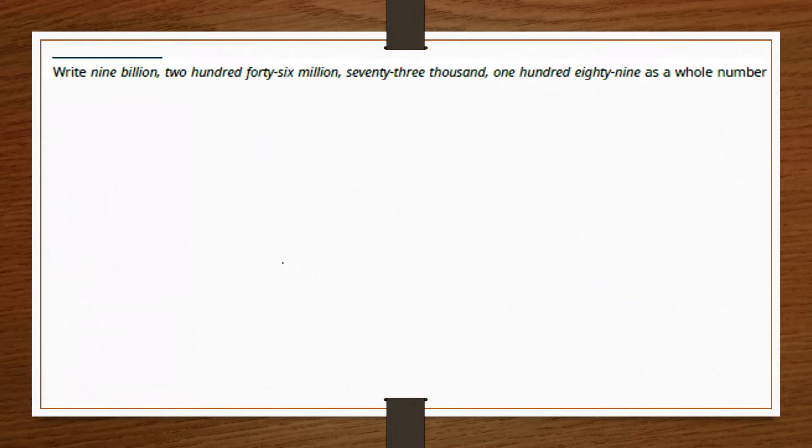So for example, here I'm asked to write 9 billion, 246 million, 73,189 as a whole number.